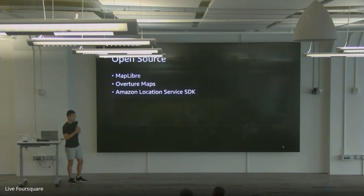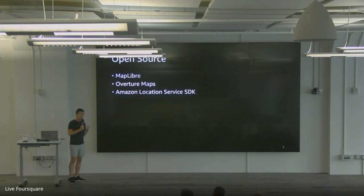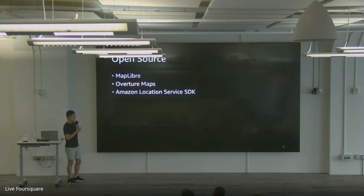Also a very recent and big initiative is Overture Maps — we work with other companies to provide an open source option for everybody on the data side. Amazon Location Service is an AWS service, and we decided to go fully open source in our strategy, which means we put all of our SDK source code on GitHub and started to develop everything in public.